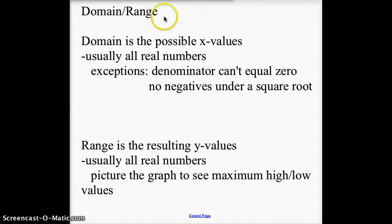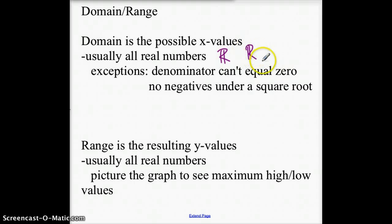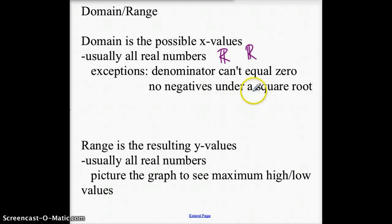First of all, we'll talk about domain and range. Domain is the possible x values that can go into a function. Usually the possible x values are all real numbers — the symbol for all real numbers is usually two bars. There are exceptions: a denominator can never equal zero, so the function could have a domain of all real numbers except x cannot equal whatever. And then no negatives under a square root, so those would look like x is greater than or equal to 7 or whatever values you can have under a square root that make positives.